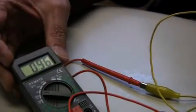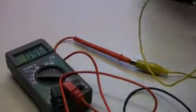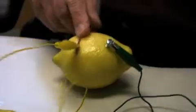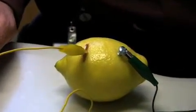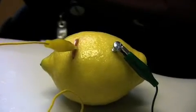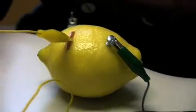Our lemon battery is producing 0.96 volts, almost a volt, and the two metals we have are copper, the coin, and zinc, the coating of the screw, the galvanized screw. What happens if we try other metals? Do we get different results?